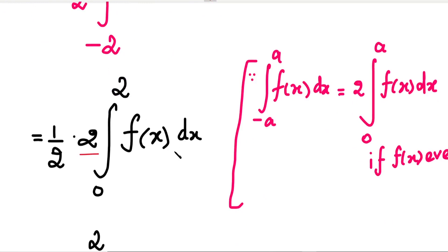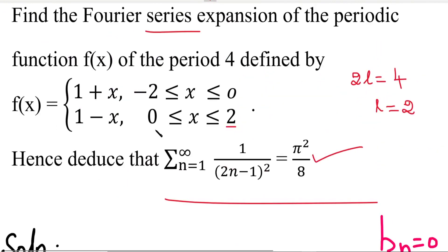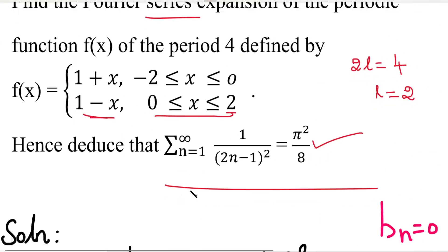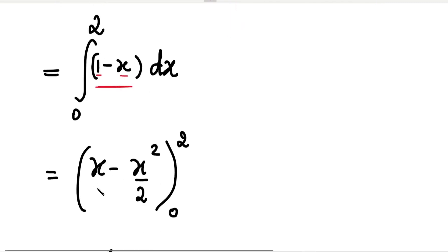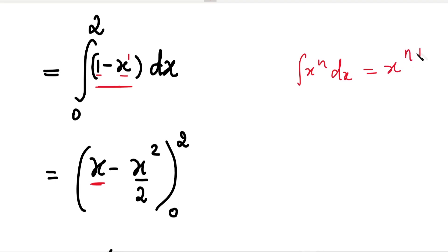Since the function is even, the integral from -l to +l reduces to twice the integral from 0 to l. So we integrate from 0 to 2. In the interval 0 to 2, f(x) = 1-x. Substituting f(x) = 1-x and integrating: the integral has two functions. The first function is constant 1, whose integral is x. The second function is x with power 1, and the integral of xⁿ is x^(n+1)/(n+1), so integral of x is x²/2.